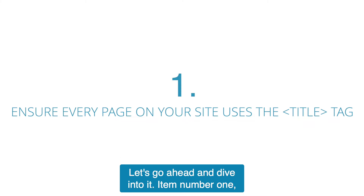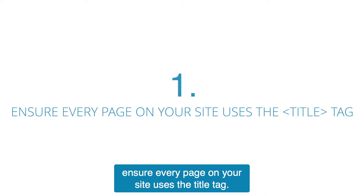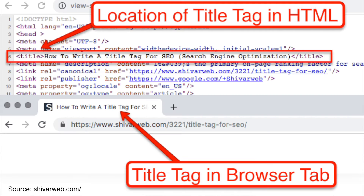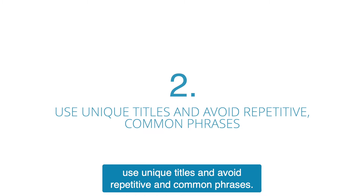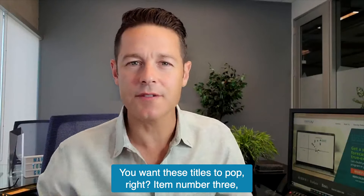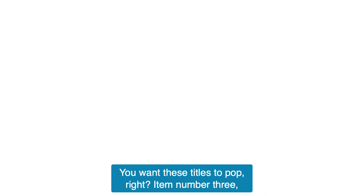Item number one: ensure every page on your site uses the title tag. I'm going to go ahead and pull that up on the screen so you can see what that looks like. Item number two: use unique titles and avoid repetitive and common phrases. You want these titles to pop.